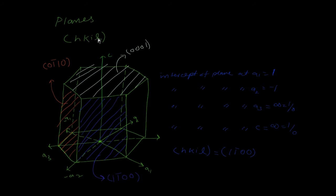Planes in an HCP unit cell are indicated by four indices: h, k, i, l. This is your HCP unit cell. The central point is the origin with a1, minus a1, a2, minus a2, a3, and minus a3 directions indicated. We have three different planes to analyze; we will start with the front plane indicated by the blue lines.